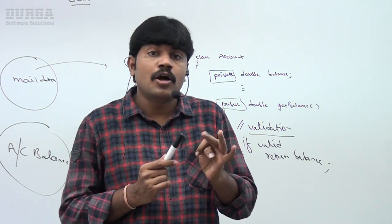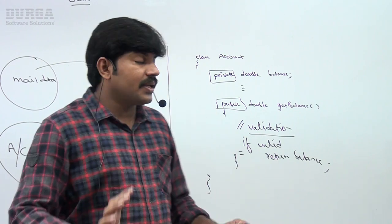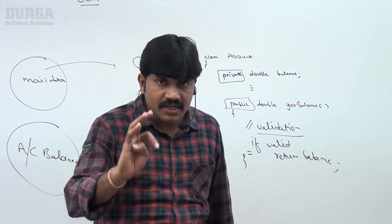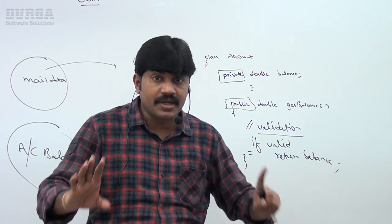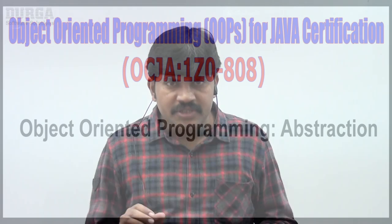The biggest advantage of data hiding is security. To summarize: outside persons should not access our internal data directly. By declaring the data member as private, we can implement data hiding. The main advantage is security. The highly recommended modifier for variables and data members is always private, because to implement data hiding, private is required.